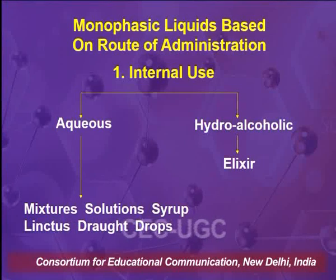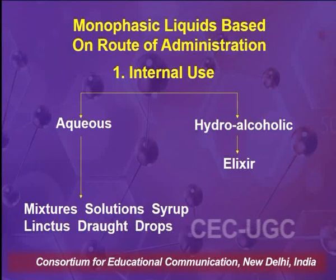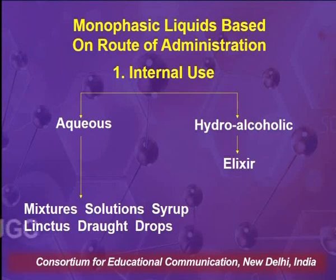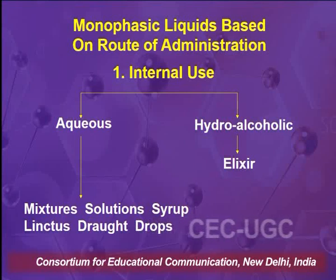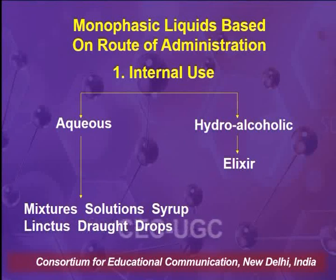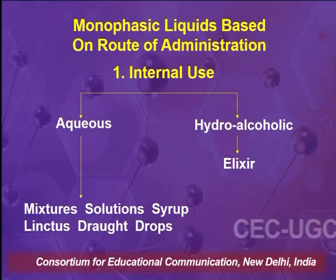To understand monophasic liquid dosage forms, especially regarding route of administration, one has to look into the classification criteria. Based on route of administration, for internal use, monophasic liquids are categorized into aqueous preparations — which include mixtures, solutions, syrups, linctus, draughts, or drops — and hydroalcoholic-based preparations such as elixirs.